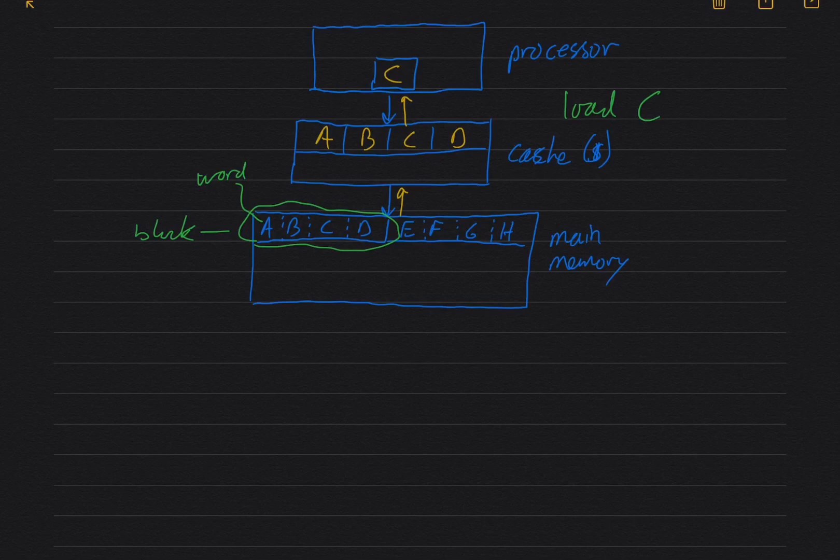And then maybe it's going to need, maybe it's going through an array. So C was the start of an array and next it's going to want the next element, which is item D here. So we'll request D and it's got that. So taking advantage of the temporal locality and the spatial locality. All right.